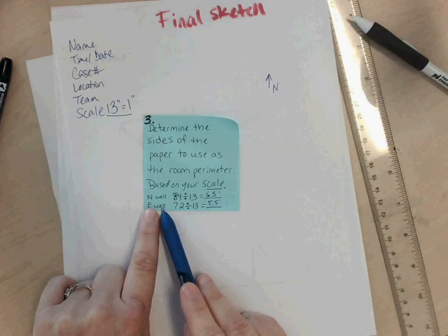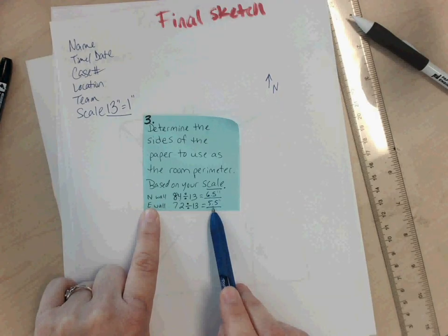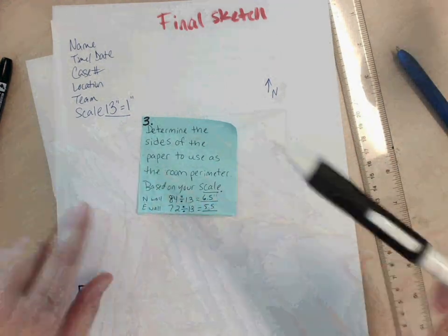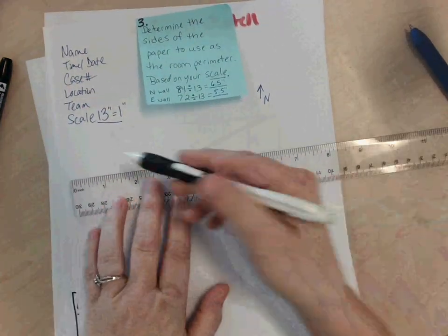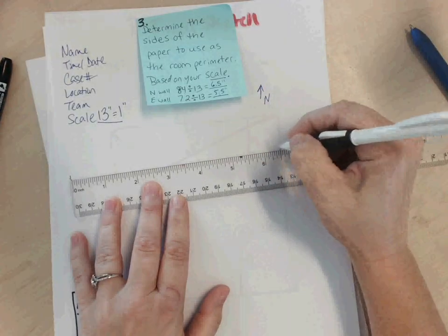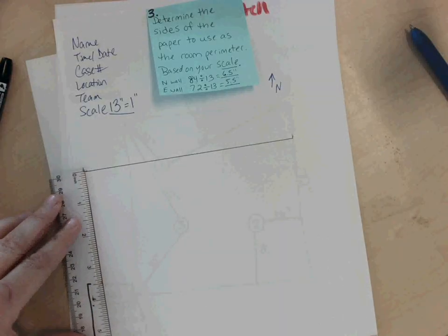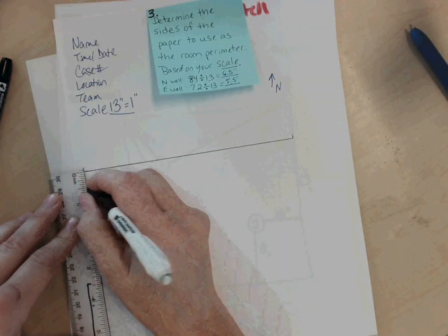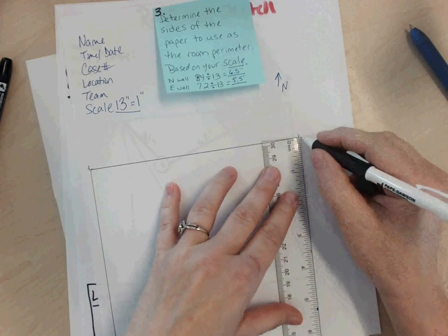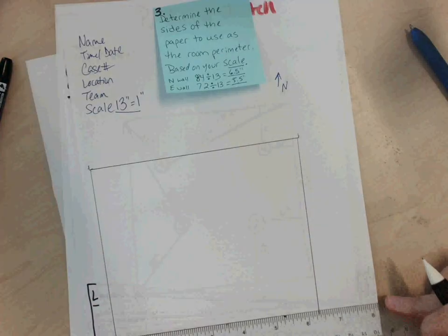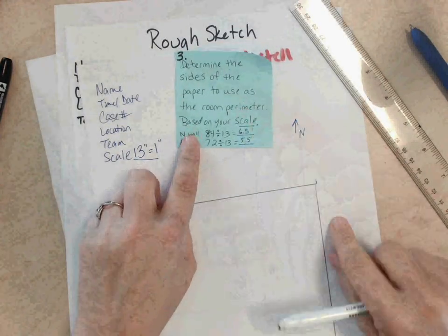My easternmost wall in the real crime scene was 72 inches. I'm going to divide by 13, my magic number, and that is going to give me 5.5. So using a pencil, I'm going to measure 6.5 inches from here to here. This is my north wall. Ideally, you would use a T-square to do this to make sure your lines are all perfectly 90 degrees. This is my east and west wall. 5.5 inches, and then again, 6.5 inches this way. So now I have my perimeter set up, so that is good to go.